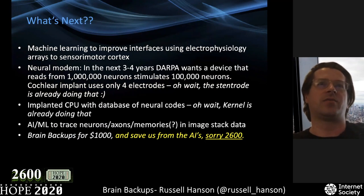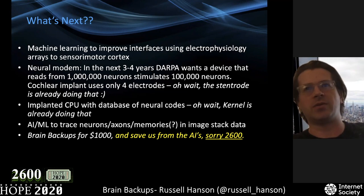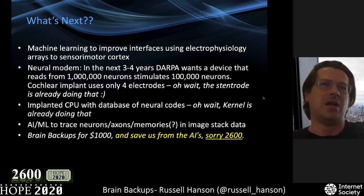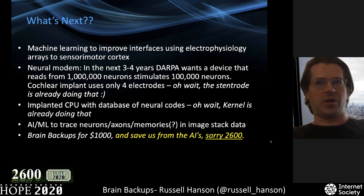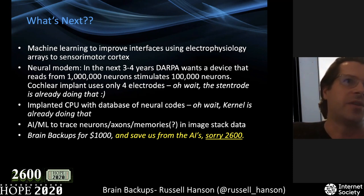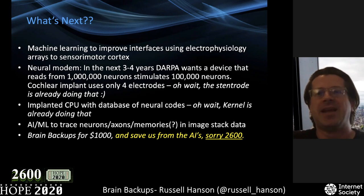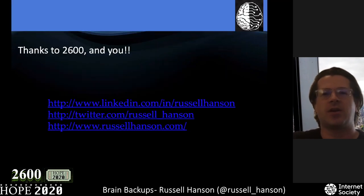What's next? Of course there's a lot of work from companies and DARPA — implanted CPUs, databases of neural codes, Elon Musk, Kernel, and many other companies are working on that. Using artificial intelligence to analyze the brain will be hugely impactful in the next several years. The optimistic goal of making a thousand-dollar connectome seems somewhat easy now compared to when we started. Anyway, that's my talk.